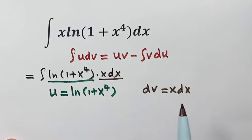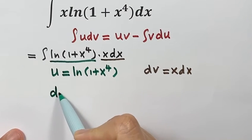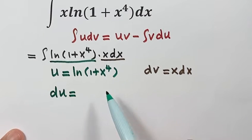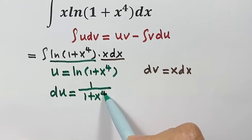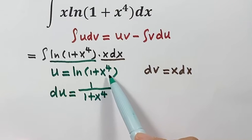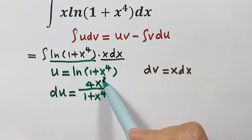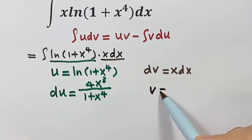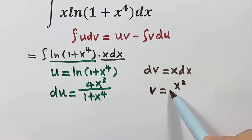In order to use the formula, we need to figure out du and v. For du, we take the derivative of natural log of 1 plus x to the fourth, giving 1 over 1 plus x to the fourth. Then by the chain rule, we take the derivative of the inside, which gives 4x to the third. For v, we integrate dv equal x dx, giving x squared over 2.